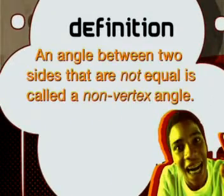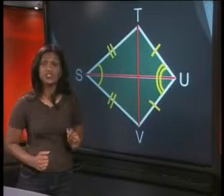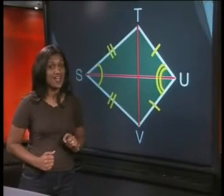An angle between two sides that are not equal is called a non-vertex angle. Right, now let's continue with the properties of convex kite.